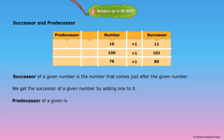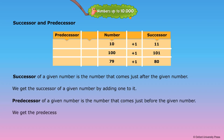The predecessor of a given number is the number that comes just before the given number. We get the predecessor of a given number by subtracting 1 from it. 10 minus 1 equals 9. 100 minus 1 equals 99. 79 minus 1 equals 78.